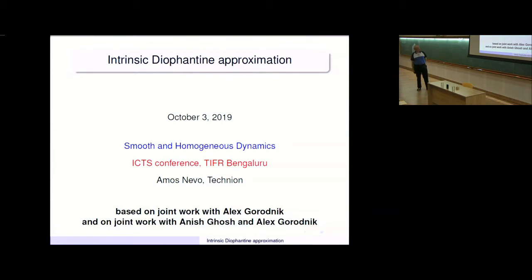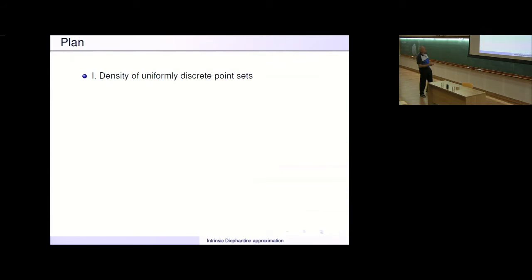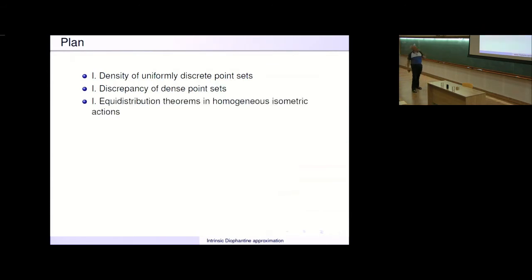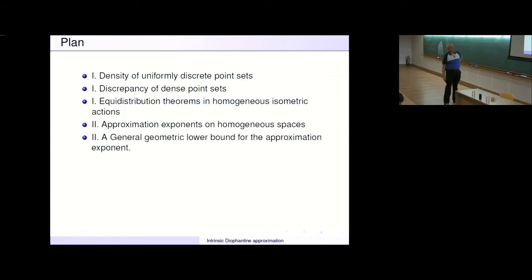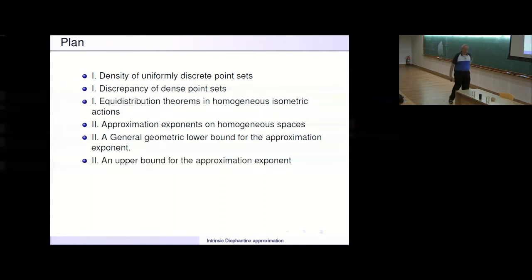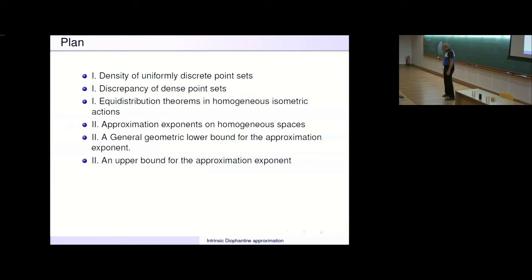The plan is as follows. If you recall, the first time around we talked about density of uniformly discrete point sets and discrepancy. Then we discussed in the second talk approximation exponents on homogeneous spaces. We gave a general geometric lower bound for the approximation exponent, and we really only stated an upper bound for the approximation exponent. Today what I would like to do is to give the barest indication of how this upper bound is proved.